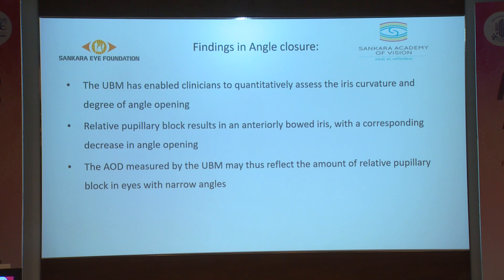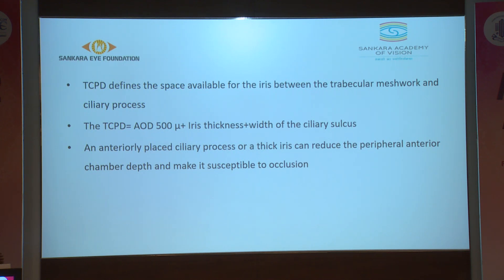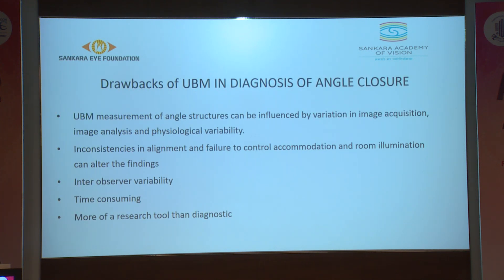UBM findings in angle closure: it enables quantitative assessment of iris curvature and degree of angle opening. Relative pupillary block results in anterior bowing of the iris with a corresponding decrease in angle opening. TCPD defines the space between the trabecular meshwork and the ciliary process; an anteriorly placed ciliary process or thick iris can reduce peripheral anterior chamber depth, making it susceptible to occlusion as seen in plateau iris. Drawbacks of UBM include variation in image acquisition, inconsistency in alignment, failure to control accommodation and room illumination, inter-observer variability, and being time-consuming — more of a research tool than diagnostic. Advantages include diagnosing plateau iris and cases of corneal haze and opacity.